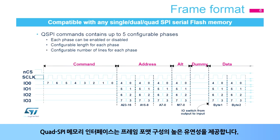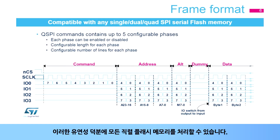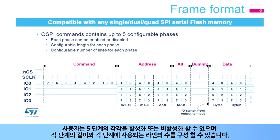The Quad SPI Memory Interface offers high flexibility in frame format configuration. This flexibility allows addressing of any serial flash memory. Users can enable or disable each of the five phases and configure the length of each phase as well as the number of lines used for each phase.